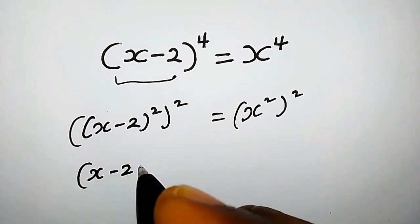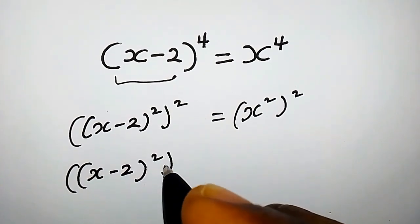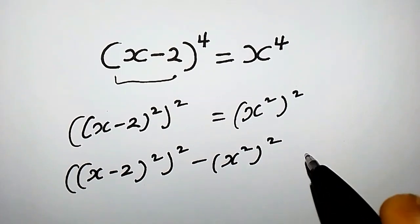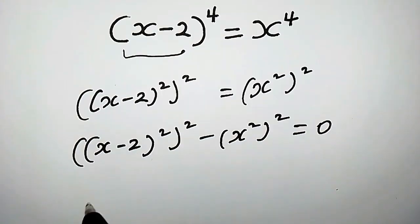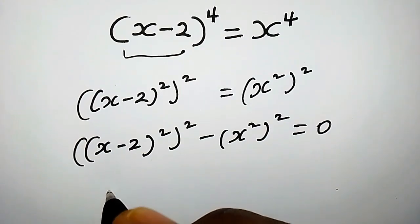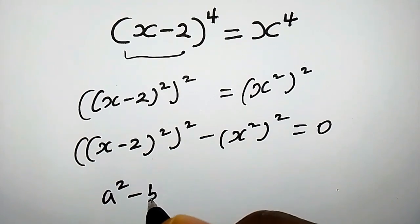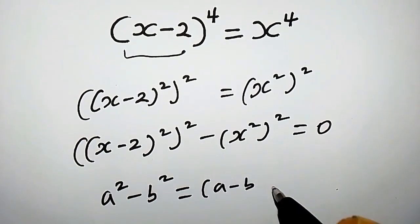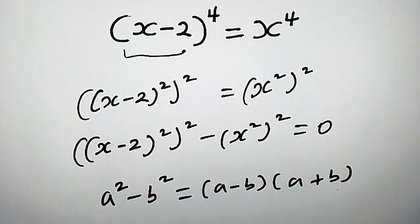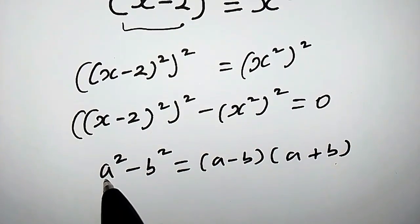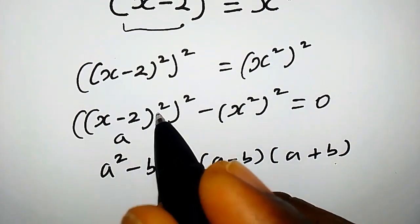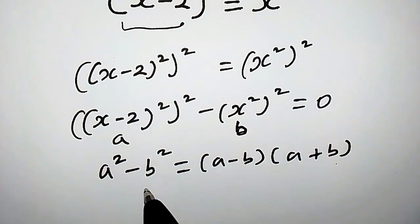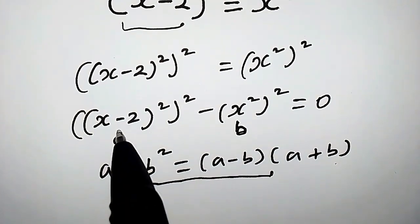Now let us bring this term to the left side, so we're going to have (x minus 2) squared times 2, minus x squared times 2, equals 0. Recall that whenever we have a squared minus b squared, this is simply the same as (a minus b)(a plus b). In this case, our a is x and our b is x squared.